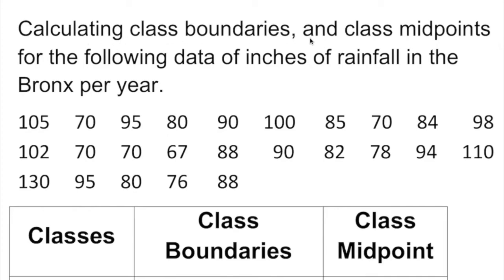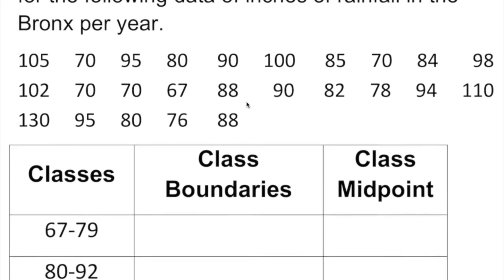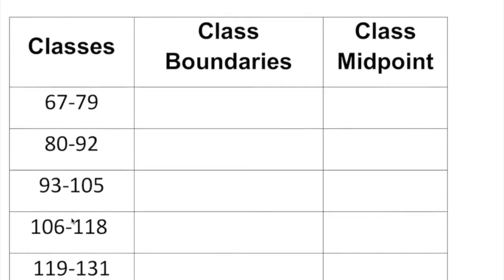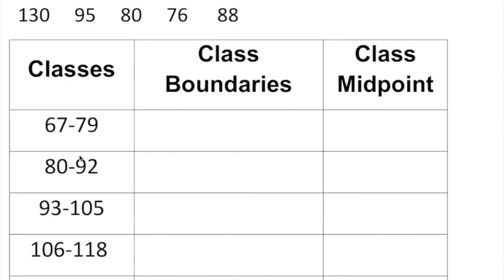We have to calculate class boundaries and class midpoints for the following data of inches of rainfall. The given data includes classes and frequencies. We are focused on classes because we are looking for class boundaries. We need class boundaries in order to construct a frequency histogram, since a frequency histogram doesn't have any space between bars.